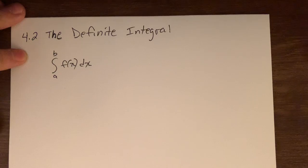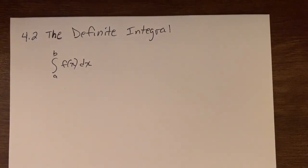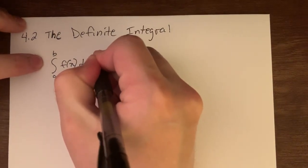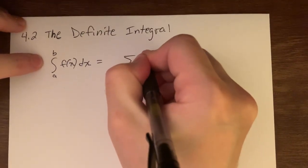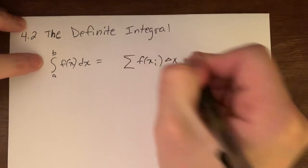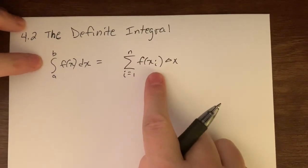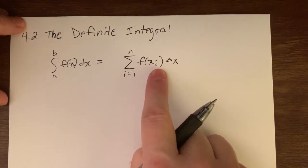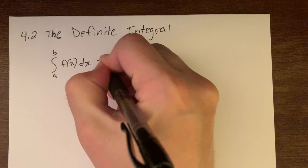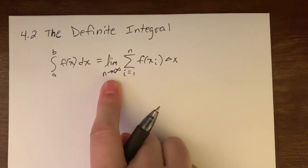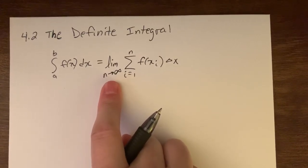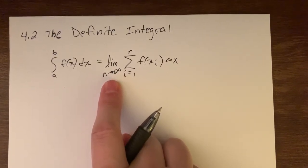All of that is formally defined based on the area under the curve work we did in 4.1. When we did those left and right endpoint sums, one gave an underestimate and the other an overestimate, and the more rectangles — the bigger n was — the closer we got to the actual area. Here, we incorporate that summation idea: the sum of f(x_i) Δx as i goes from 1 to n. As you take the limit as n approaches infinity, you're cutting an infinite number of rectangles, so left or right endpoint doesn't matter — you get the exact area under the curve.